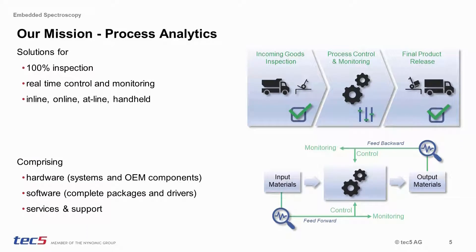The continuous monitoring of measurement data allows us to ensure product quality, to optimize production processes, and to comply with relevant regulatory guidelines. Our optical spectrometer systems are ideal solutions for 100% inspection in real-time, covering almost the complete production process. They can be integrated in or at the process line, and mobile and handheld devices are available as well.